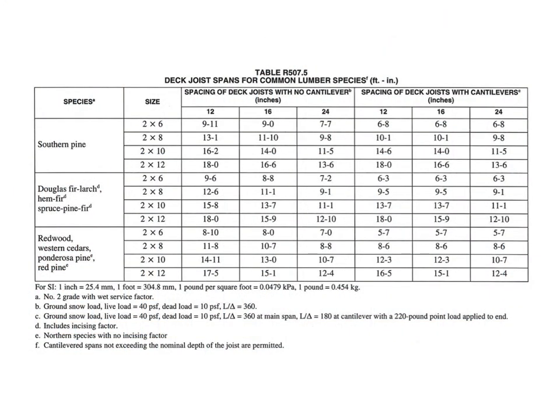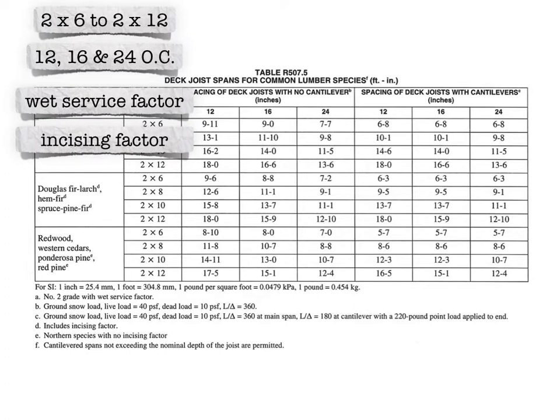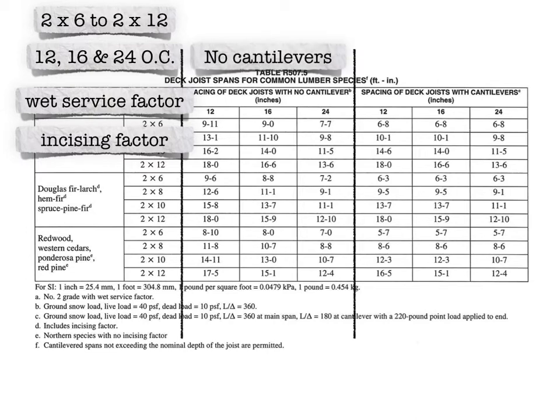The new table in the 2015 IRC is Table R507.5, and it covers everything specific for decks for the first time in the IRC. It provides for joist sizes from 2x6 to 2x12, set at 12 inches, 16 inches, and 24 inches on center. It includes a wet service factor, so it's meant for wood that's out in a wet environment. It also includes incising factors for certain species where the material is incised on the exterior to allow pressure-treated material to soak in, such as Douglas fir.